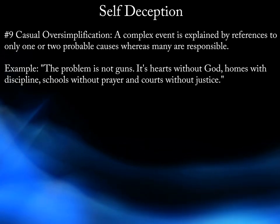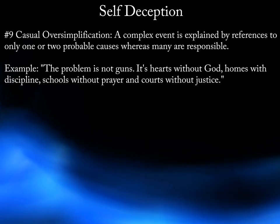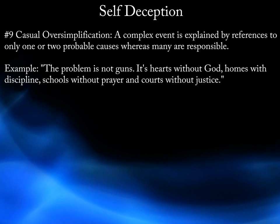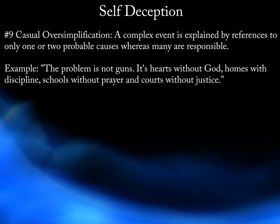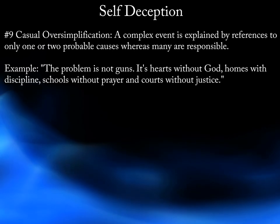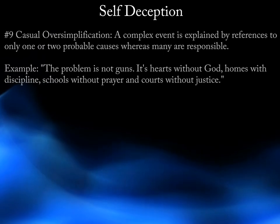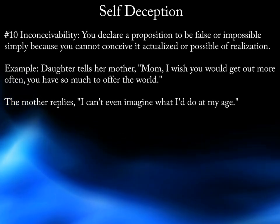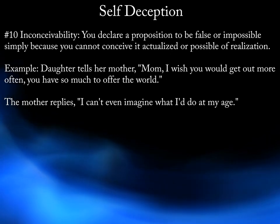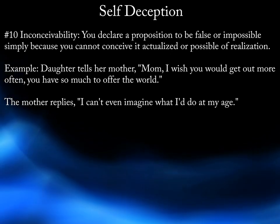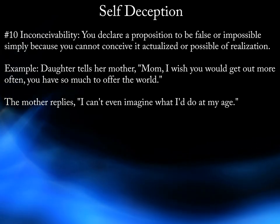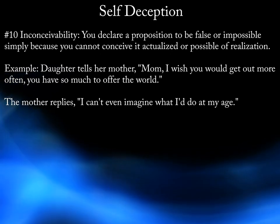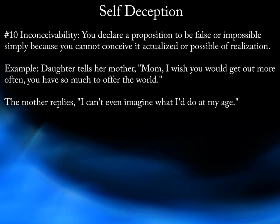9. Causal Oversimplification. A complex event is explained by references to only one or two probable causes where many are responsible. Example: "The problem is not guns — it's hearts without God, homes without discipline, schools without prayer, and courts without justice." 10. Inconceivability. You declare a proposition to be false or impossible simply because you cannot conceive it actualized or possible of realization. Example: Daughter tells her mother, "Mom, I wish you would get out more often — you have so much to offer the world." The mother replies, "I can't even imagine what I'd do at my age."